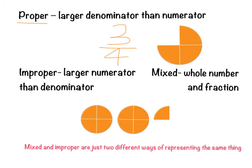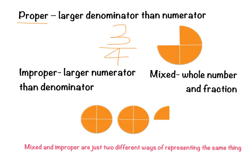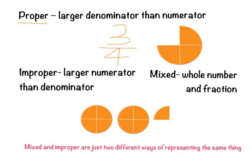The next thing we need to look at is improper fractions and mixed numerals. Improper fractions have a larger numerator than denominator. For example, nine over four. Looking at the picture, four parts make up a whole, and we have one, two, three, four, five, six, seven, eight, nine — nine parts total. That's how we write it: nine over four.